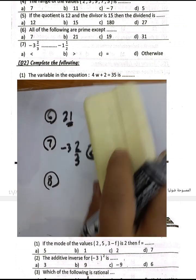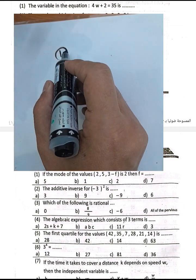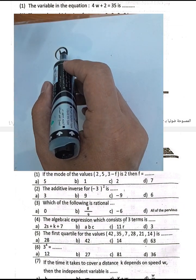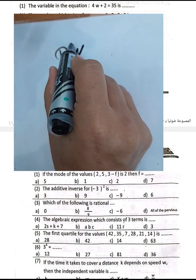Now solving section 2, question number 1: complete the following. The variable in the equation is w. The verbal phrase for the product with w can be written as 8w equals 35. The algebraic factor here is w.